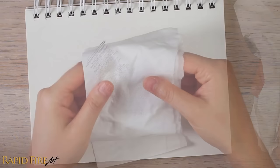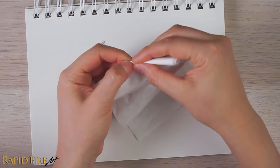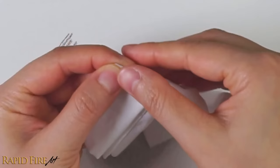If you need to blend a detailed area, fold the tissue over twice and then fold it into a triangle several times to get a fine point.